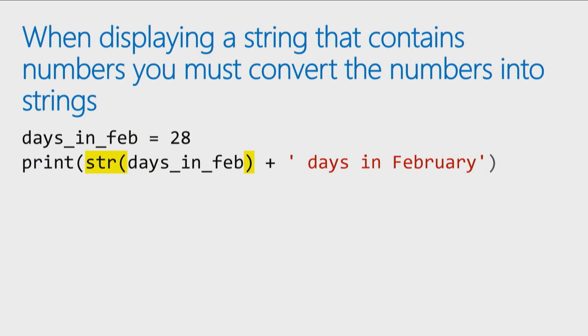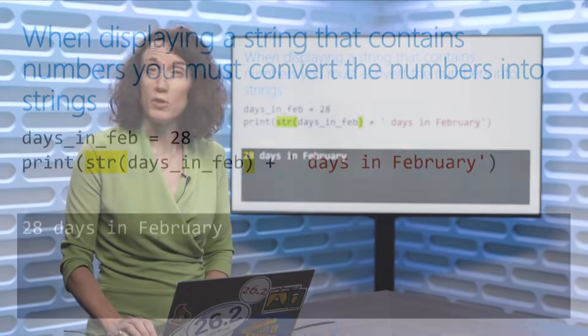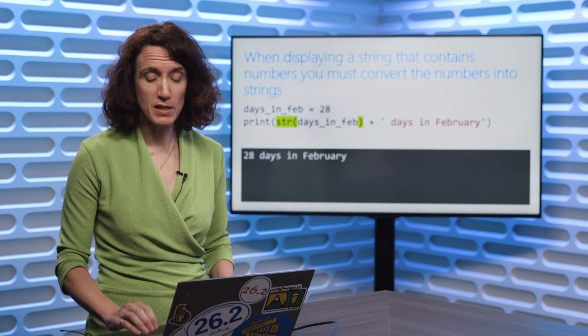So all we have to do for Python is to convert any data type to a string, you just call the string function. So we call the str function, we pass it days in February, which is currently a number, and now it's going to treat that as a string. Now we say, you want to concatenate string plus another string, I know what to do. Put those together and displays our message on the screen correctly. So string function is going to save you a lot when you start working with numbers and strings, mixing the two up.